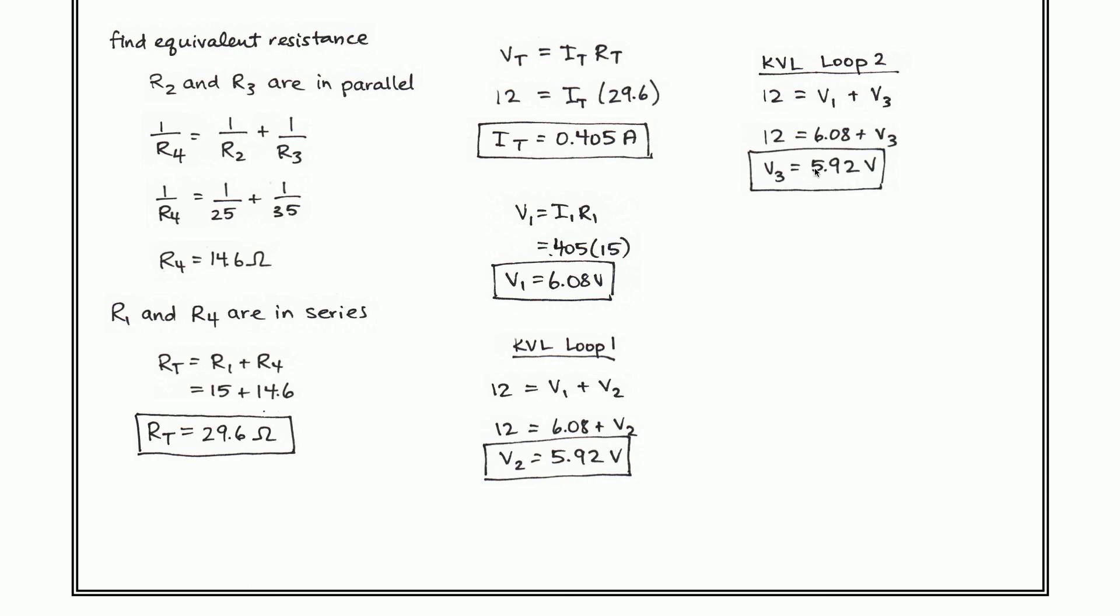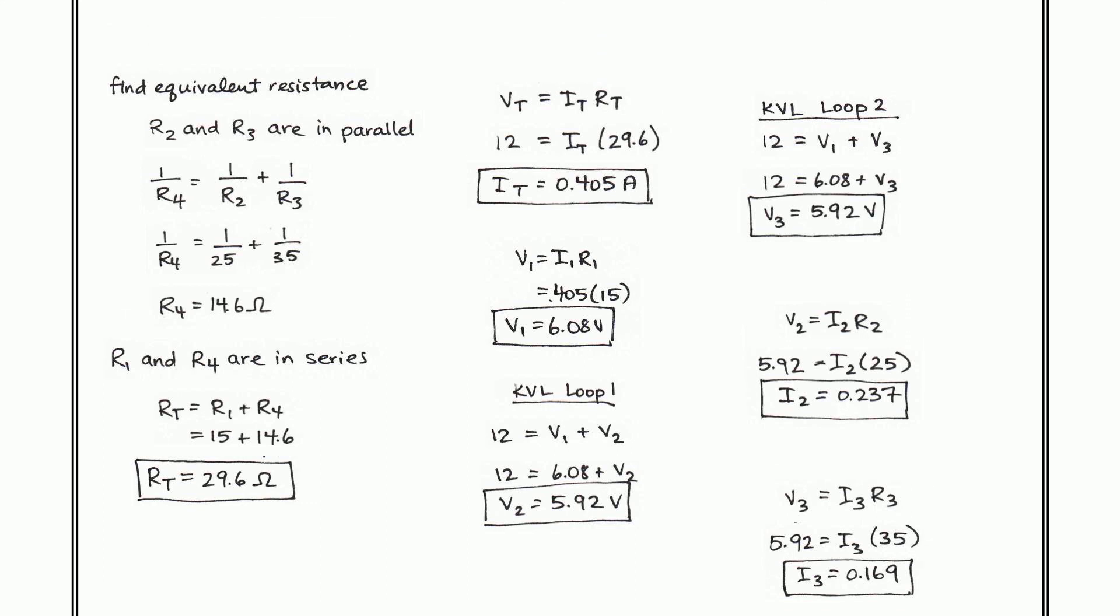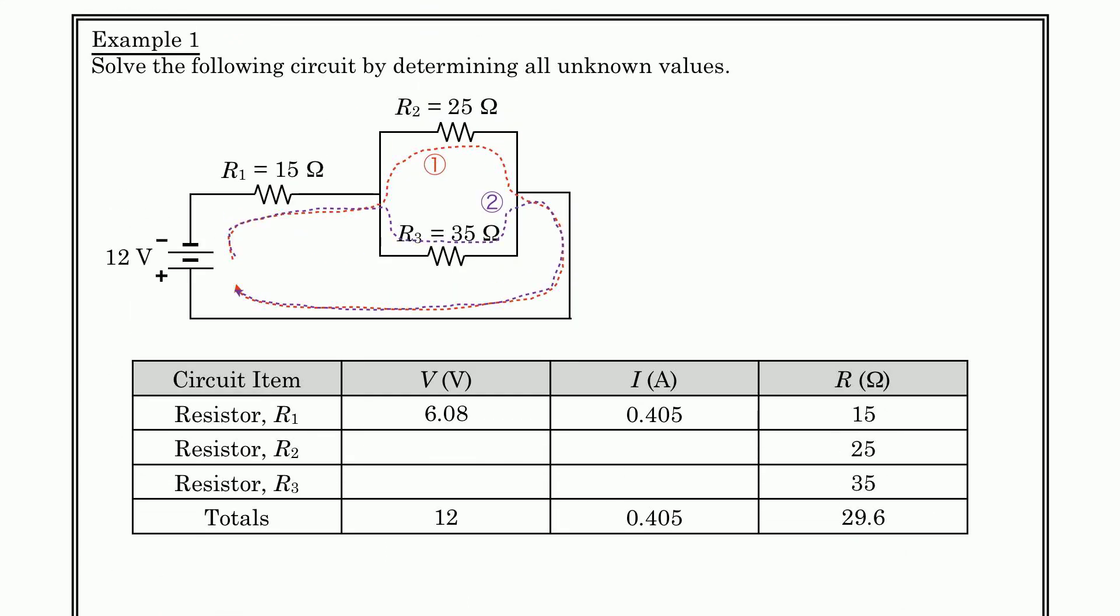Now that we know V3 and we know R3, we know V2 and we know R2, we can find our last two values of current. The current that goes through resistor 2 is 0.237, and the current that goes through resistor 3 is 0.169. So we can come back up to our original diagram and we can fill in the rest of the chart, and this would represent a complete solution.